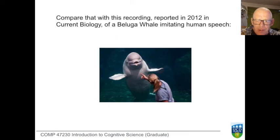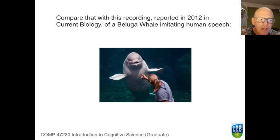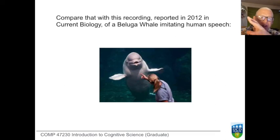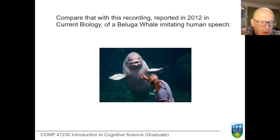The first thing to note is that this is nothing like the sounds belugas normally make — they make sounds much higher pitched, around 2000 hertz, whereas this is around 200 hertz. The second thing to note is that, as a phonetician, this is a remarkable simulacrum of human speech. There are phrases, and the phrases exhibit a declining intonational contour — high at the beginning, dropping towards the end — and the phrases are articulated into individual syllables. All of those are universal characteristics of human speech and language.